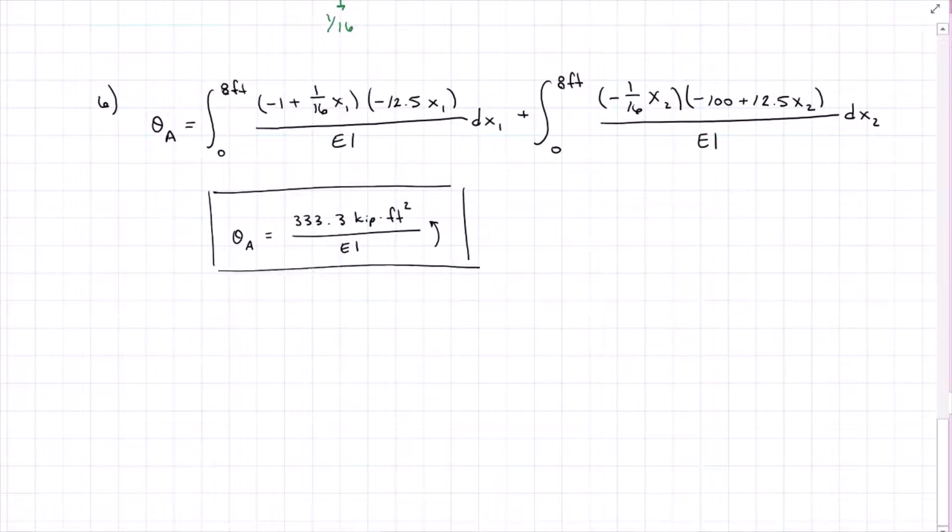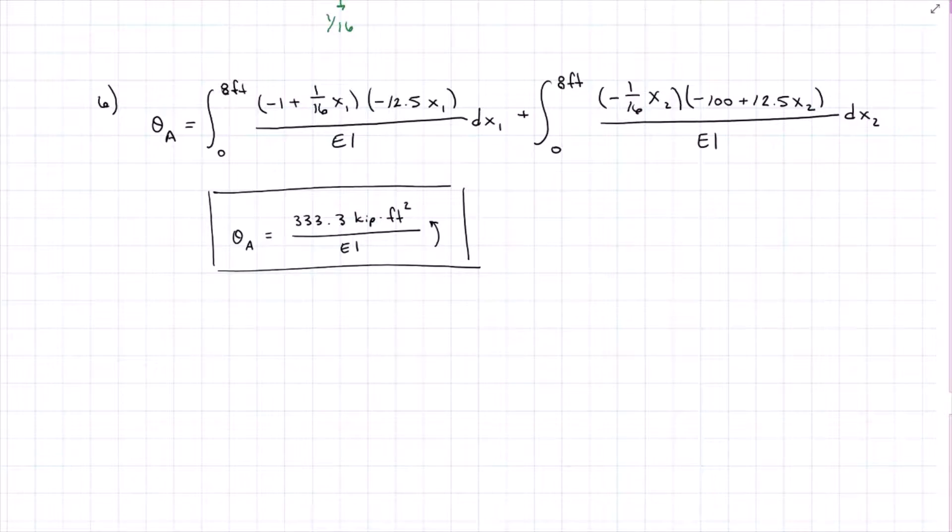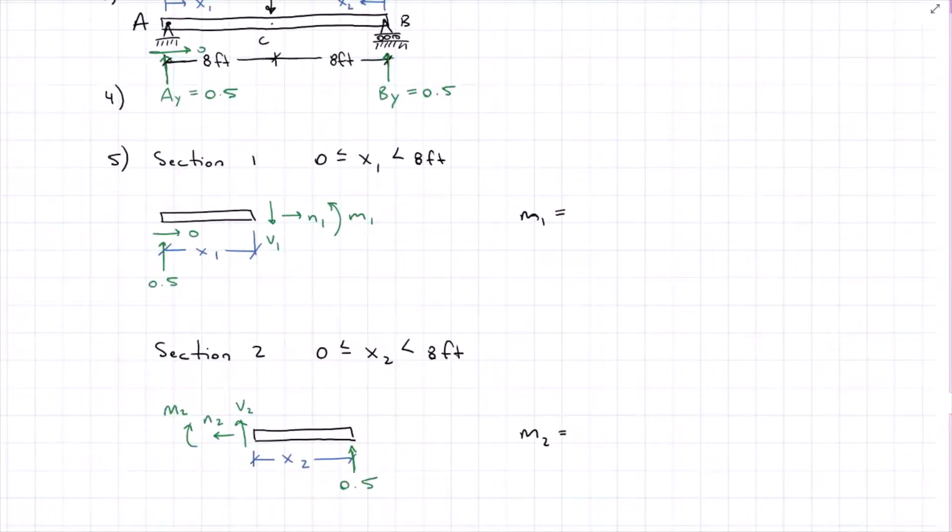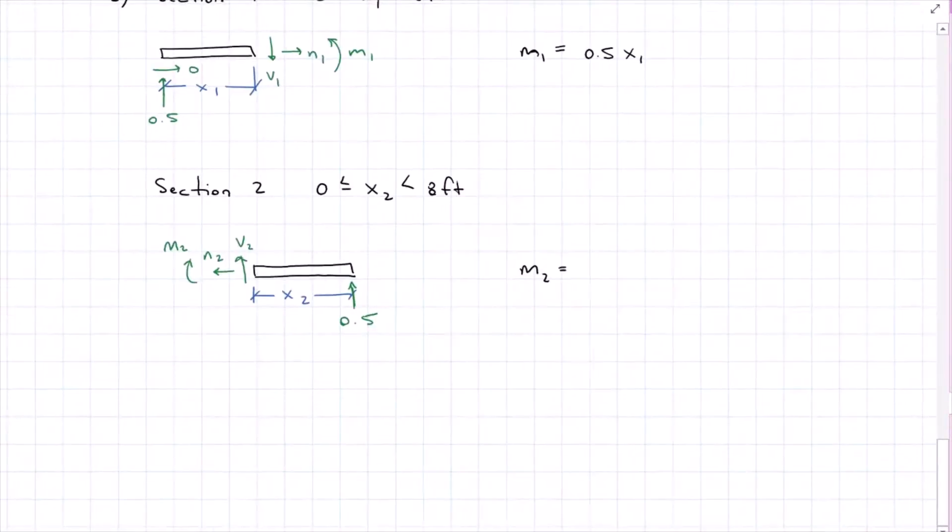Now we're going to repeat steps three through six for our deflection at C. Of course, this time for the deflection at C, we want to apply a point load at C, because that's where we're looking for the deflection. Symmetrically loaded, symmetrically supported, we find that AY is 0.5, as is BY. So when we come down to the sections, the same sections that we cut with the original loaded moment equations, we have moment one is 0.5 X1, and moment two is 0.5 X2.